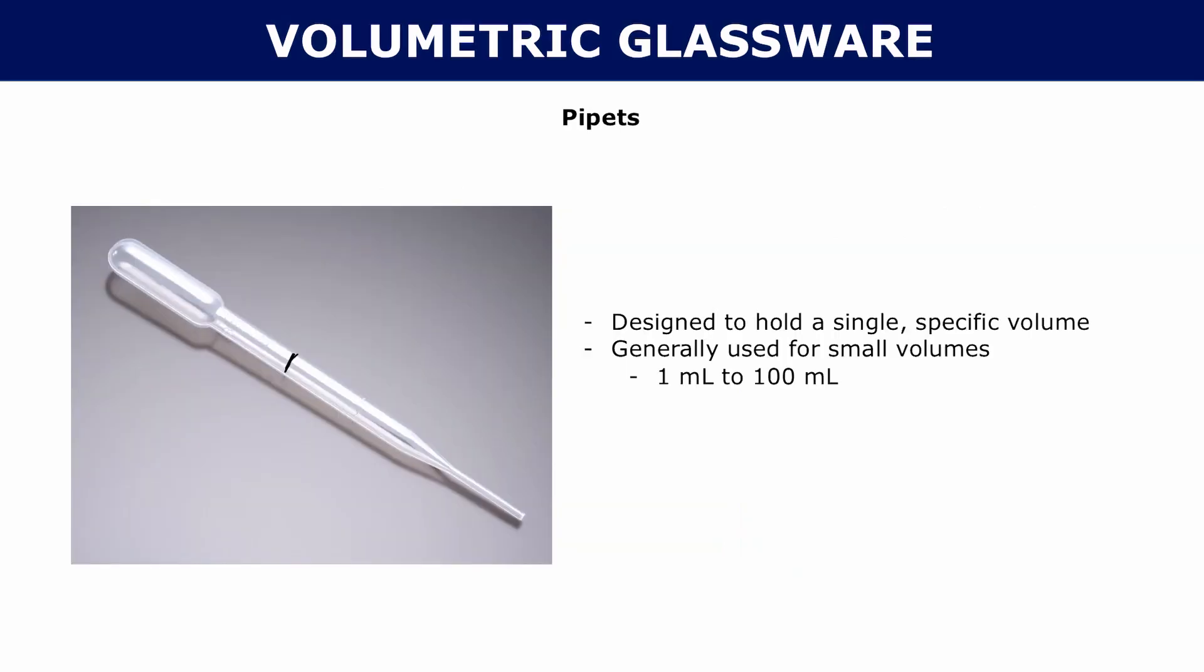The last one that we're going to look at is a pipette. Pipettes are designed to hold a single specific volume. They're kind of similar to volumetric flasks, except pipettes are usually used on a more smaller scale. You have really small volumetric flasks, but pipettes are more generally used for small volumes, like from 1 mil to 100 mils. Pipettes have those markings at the side. You can kind of see them here. That's designed to only hold a single specific volume.